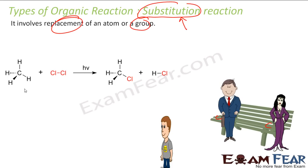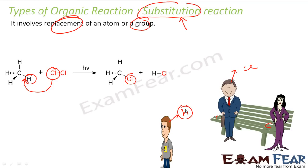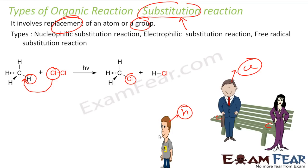For example, if we have methane and chlorine — chlorine is a powerful reagent. It kicks out hydrogen. Chlorine kicked out hydrogen and got displaced into the methane. This is the same idea: chlorine is the powerful guy, hydrogen is the common guy. So chlorine kicked out hydrogen. This is an example of substitution reaction, where you replace a weak atom with a powerful one. There are various types: nucleophilic substitution, electrophilic substitution, and free radical substitution.